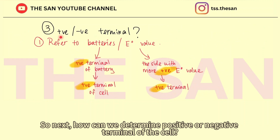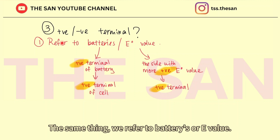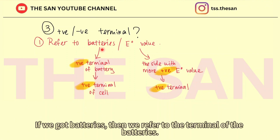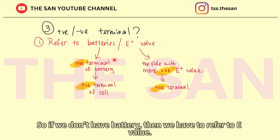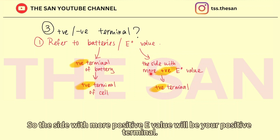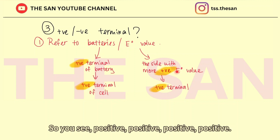How do we determine the positive or negative terminal of the cell? Same approach — refer to the battery or the E0 value. If we have a battery, the positive terminal of the battery is the positive terminal of the cell. If we don't have a battery, the side with the more positive E0 value is the positive terminal. Positive, positive, positive — very easy.